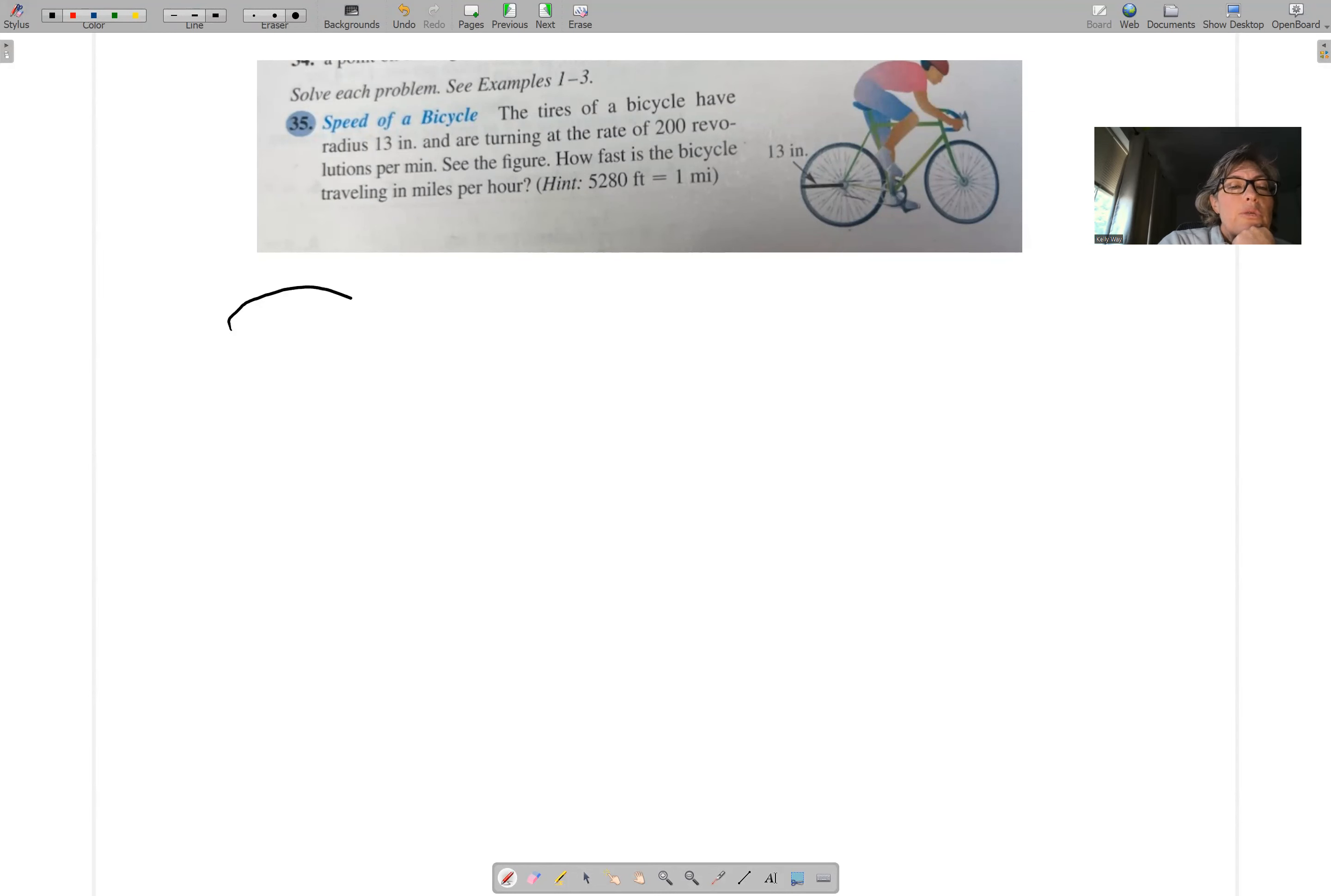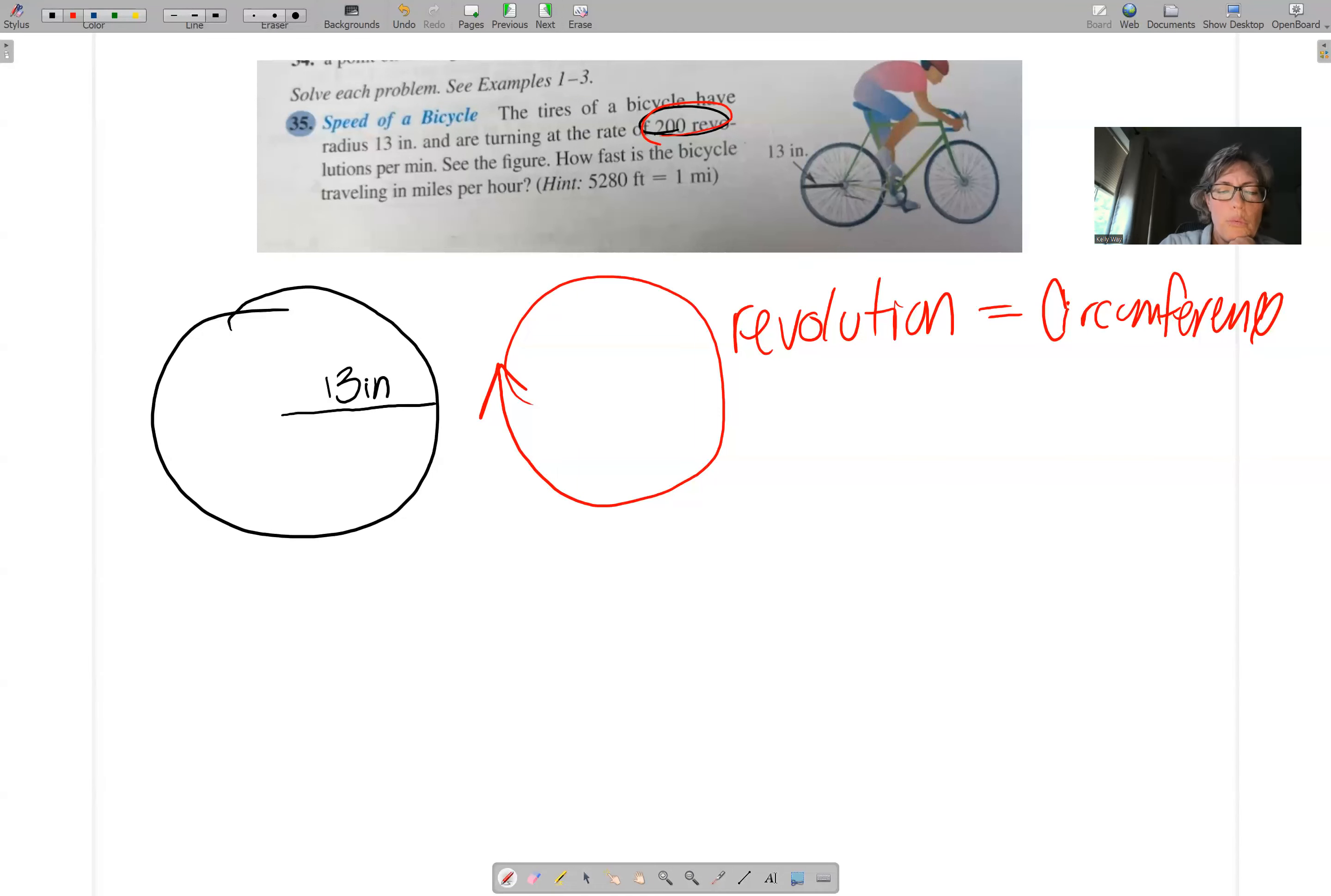So the first thing we need to visualize is the fact that when it talks about revolution, 200 revolutions per minute, that revolution is code for circumference. So when it talks about a wheel revolving, a wheel turns on the length of... When that turns like that, it's the circumference.